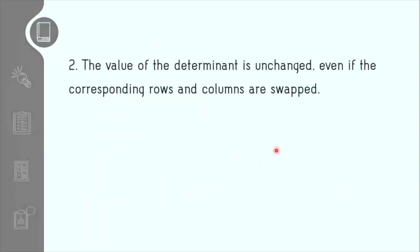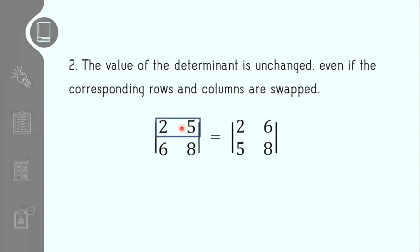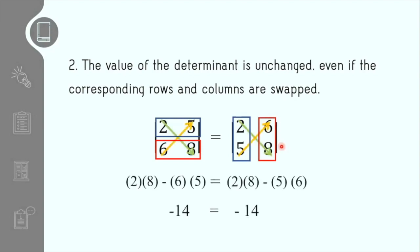Theorem number 2 states that if all of the rows and columns are interchanged, the value of the determinant will still be the same. As we can see, the elements in the first row were moved to the first column, and the elements in the second row were moved to the second column. If we solve for each determinant, we will still get the same result. The main idea of theorem number 2 is that all rows and columns are swapped.